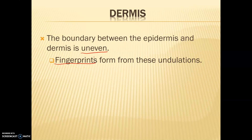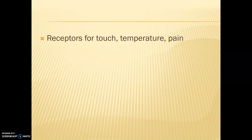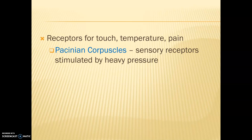If you look at your fingers right now, you'll see all different kinds of swirls — that's because of that uneven barrier between our epidermis and our dermis. The dermis is mostly composed of irregular dense connective tissue. Also found in our dermis are receptors for touch, temperature, and pain. Some of these are Pacinian corpuscles, which are sensory receptors stimulated by really heavy pressure — so if someone is pressing down on you, you're going to engage these corpuscles.